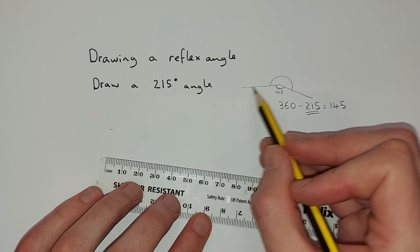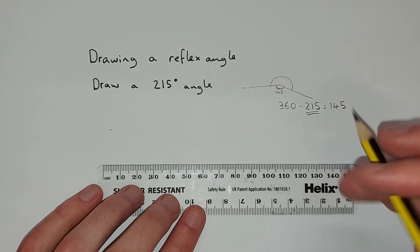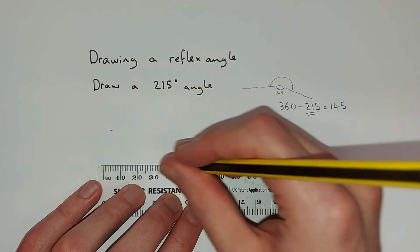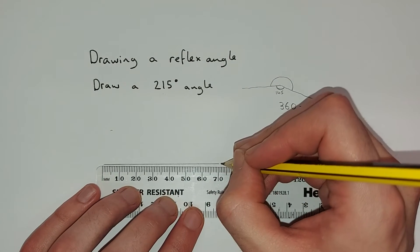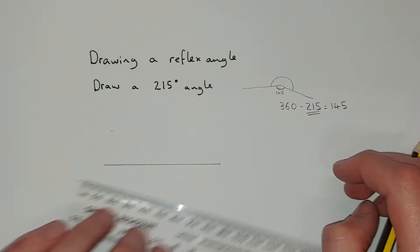So we're going to start off with, let's do this line here. So we'll do a straight line like this. It might be worth doing a little mark so we can see where the end of the line is.